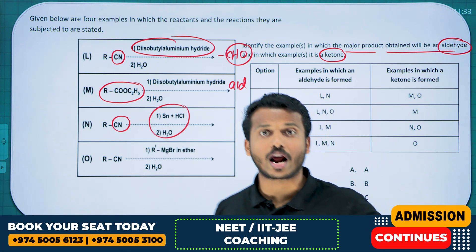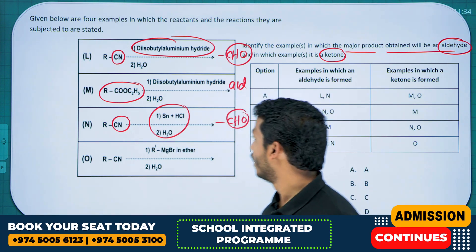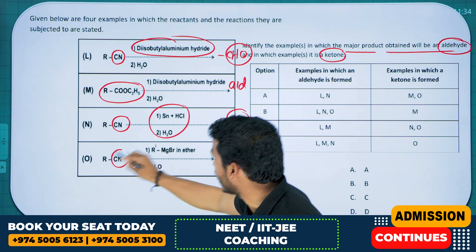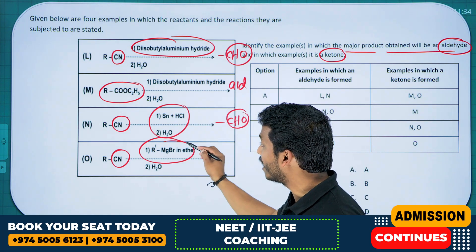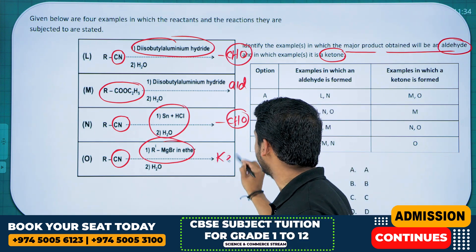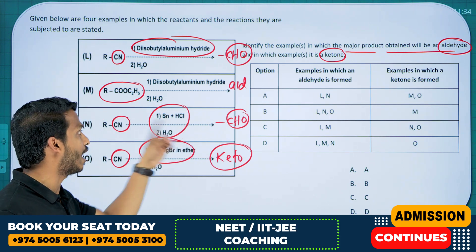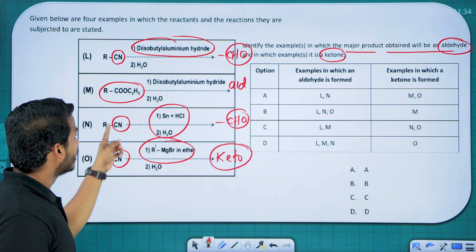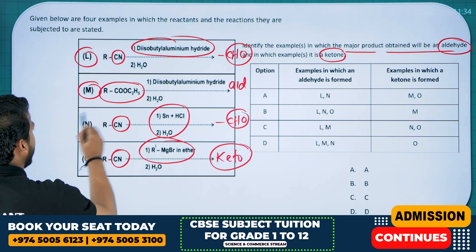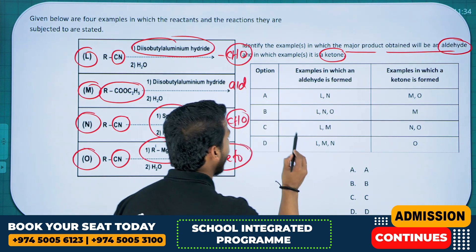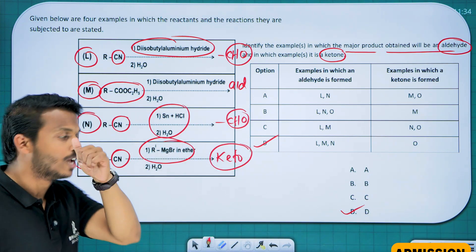Cyanide on reduction with tin and HCl, or iron and HCl, or hydrogen with palladium — that will give aldehyde. And the one given as RCN (cyanide) reacting with a Grignard reagent — cyanide when reacted with Grignard reagent will give ketone as a product. Also, nitro on reaction with tin and HCl or iron and HCl gives amines. Cyanide on reaction with tin and HCl followed by hydrolysis also gives aldehyde. So aldehyde is formed in reactions L, M, N and ketone is prepared by reaction O. The answer is option B. Preparation part and chemical reactions — everything should be thoroughly studied.